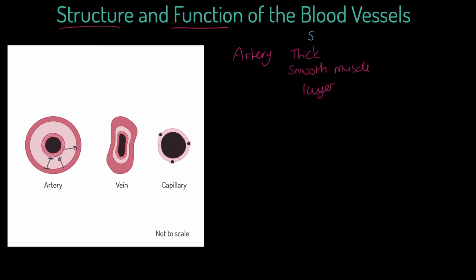Another structural feature of arteries is they have a smaller lumen — the space inside the vessel — smaller than veins. So the space inside is actually smaller than veins, which is interesting. And finally, with structure, the walls are really elastic. We are talking about this surrounding tissue — it's very elasticated. This becomes relevant when we look at the function of an artery.